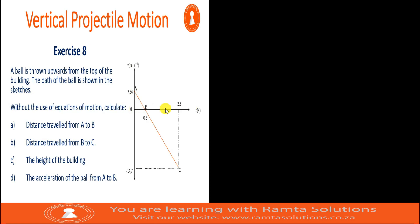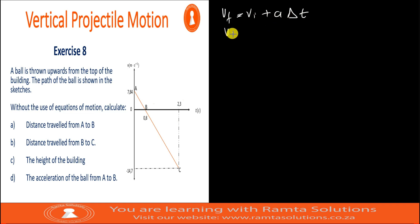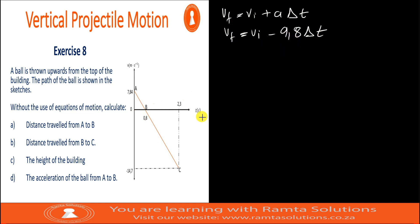We have a velocity versus time graph. The information we have here is that upwards is positive. From Vf = Vi + A·ΔT, acceleration is the gradient of this graph, and Vi is the y-intercept. When we look at this graph, the slope is negative, so this means the acceleration must be negative. This confirms that for this motion, upwards has been chosen as positive. But we're not going to use equations of motion, so no worries about this.